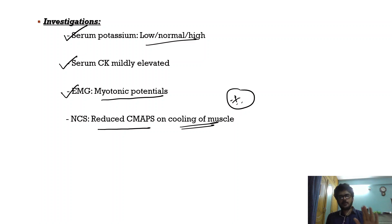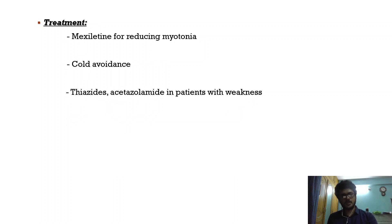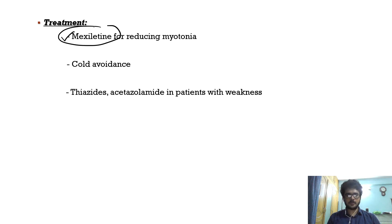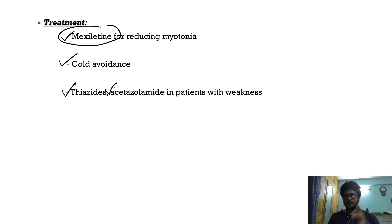Remember: in paramyotonia congenita, patients have attacks of weakness triggered by cold, and paradoxical myotonia that worsens with muscle activity — these two points are very important. For treatment, the treatment of choice for myotonia is mexiletine, along with cold avoidance. For patients with predominant episodic weakness, thiazides and acetazolamide can be useful.